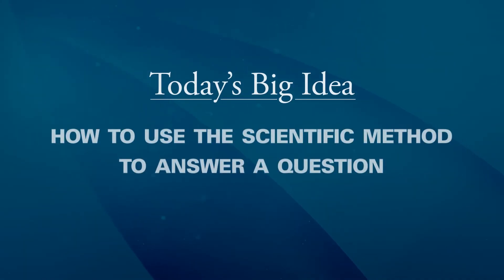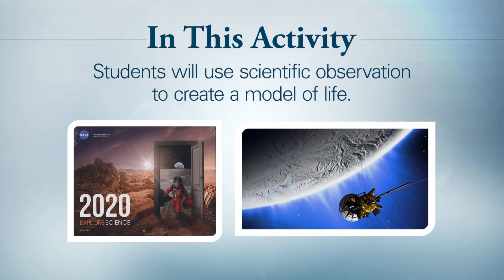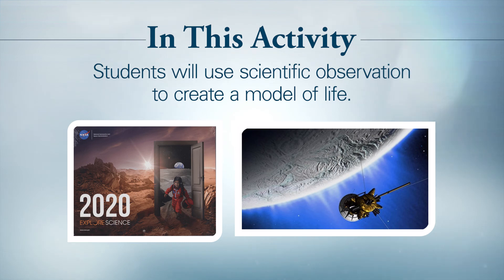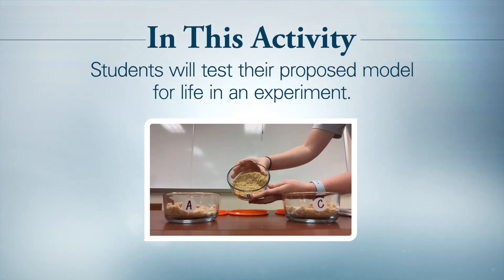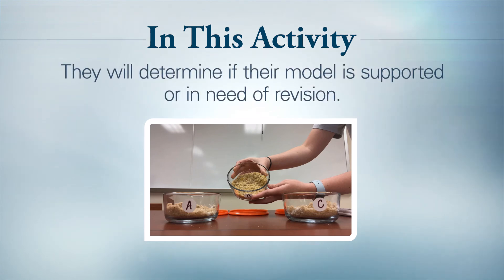The big idea is how to use the scientific method to answer a question. This all starts with students' power of observation, which they then use to create a model of what it means to be alive versus not alive. In science, when we say model, we don't necessarily mean a physical object like a model airplane or railroad. Scientists also use models to propose possible explanations for how something works in our natural world, and that is how we are going to use the term model here with student scientists. Once we've helped your student scientists develop their proposed model for life, they will conduct an experiment to collect data and determine if their proposed model is supported or in need of revision.